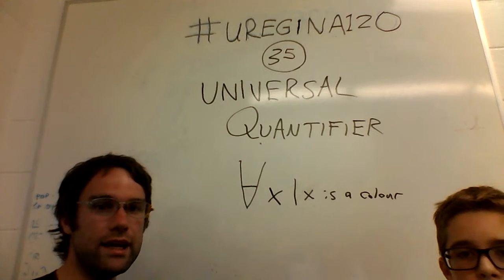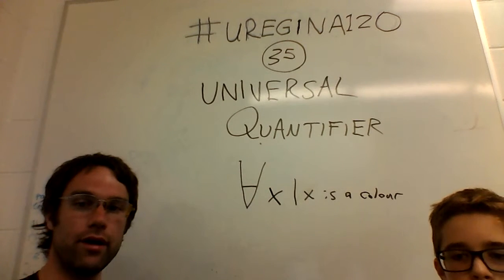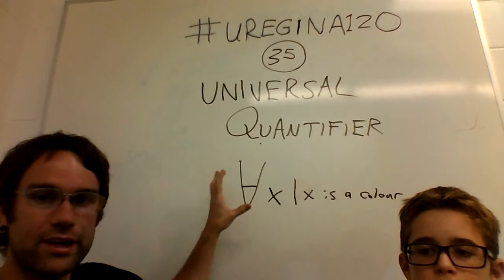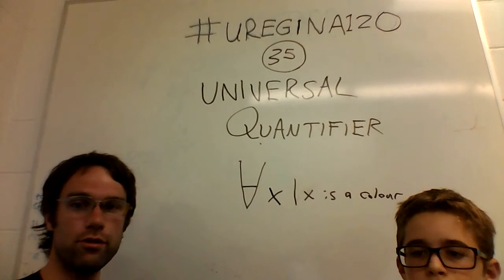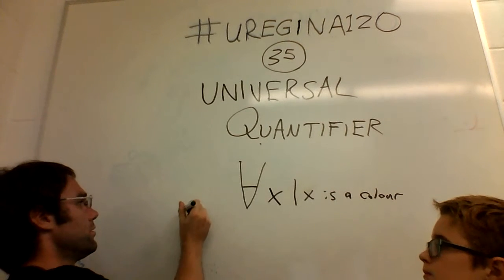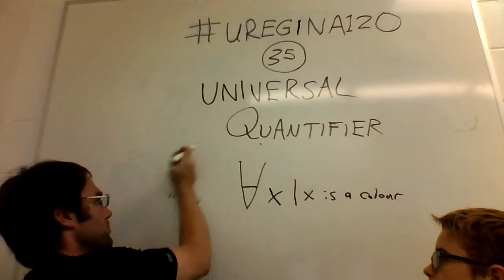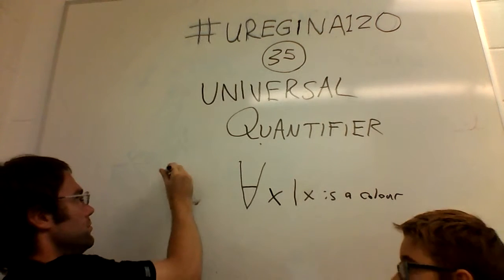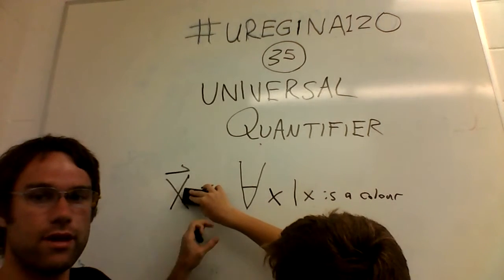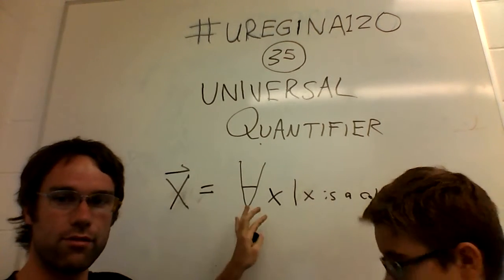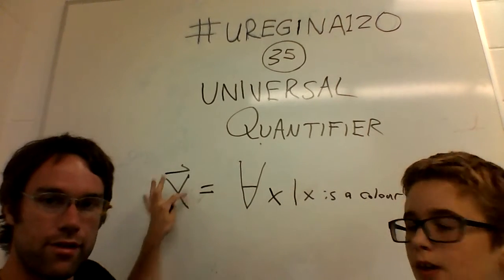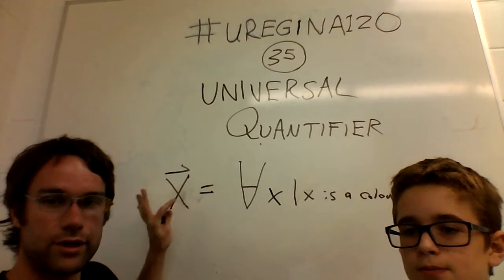You tend to need some way of dealing with the collection that you've then defined. So usually, once you have this, if you have, say, if this big X is equal to all X, or the collection of all X, where X is a color, this thing is going to mean the collection of all colors.